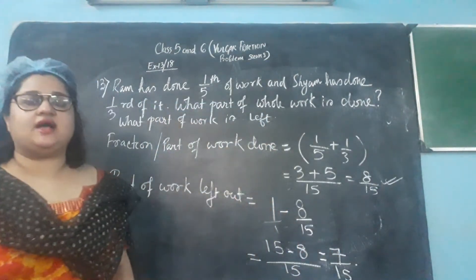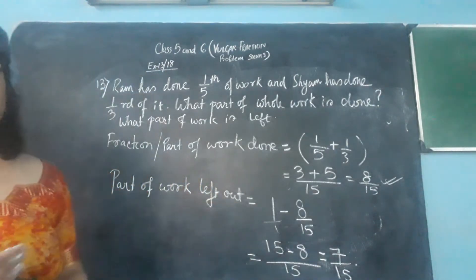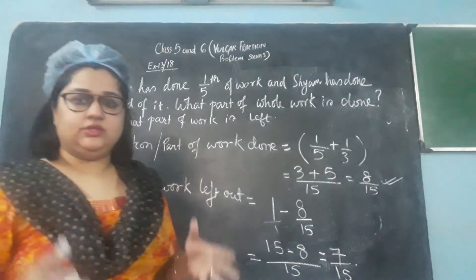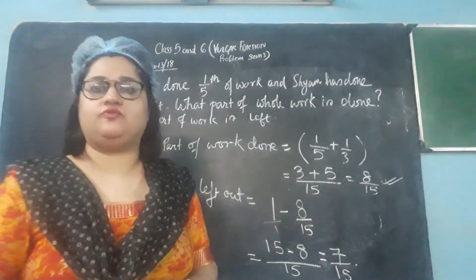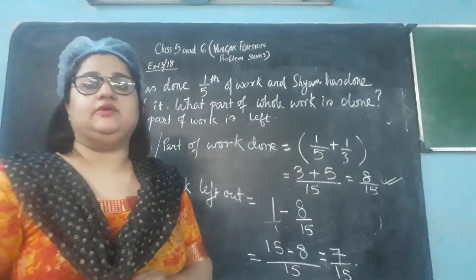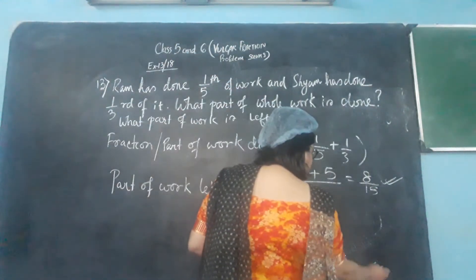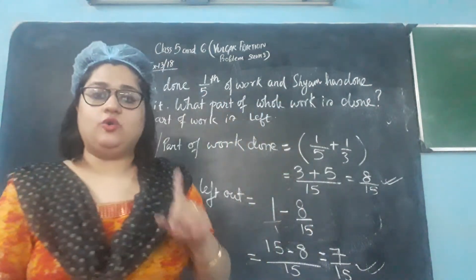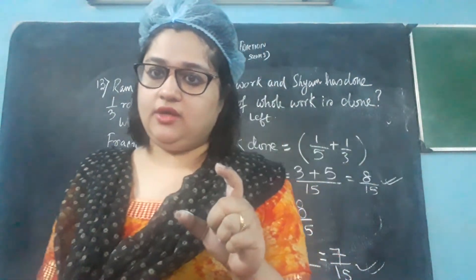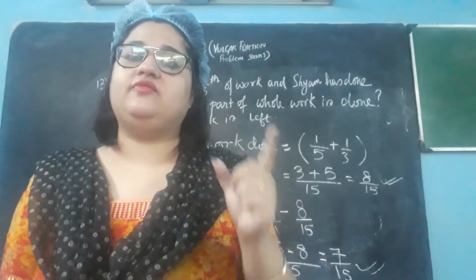So 7/15 is the answer to the second question — the fraction or part of work left out. Total work minus the fraction of work already done gives you 7/15. The only thing to remember: when the question asks for 'part,' you find the answer in fraction.